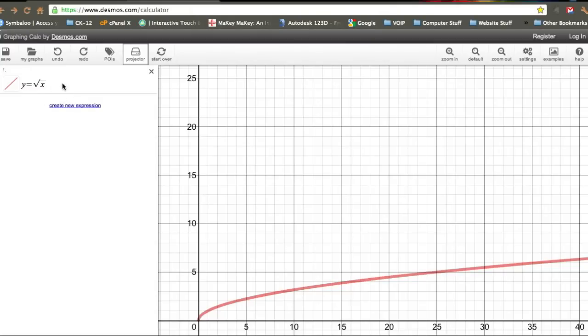I've already graphed y equals square root of x. What I'm going to do is graph y equals the square root of x minus 2. Now this is underneath the root. And you can see that by subtracting 2,